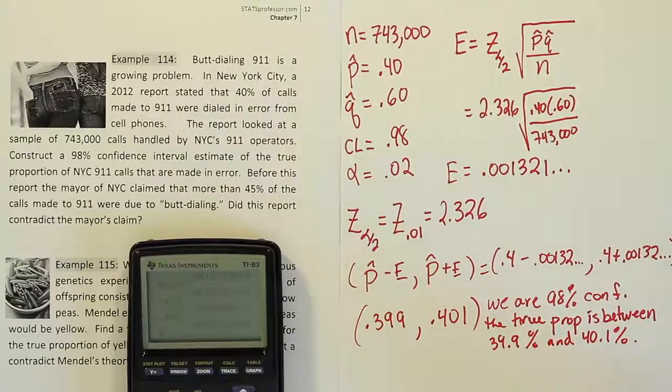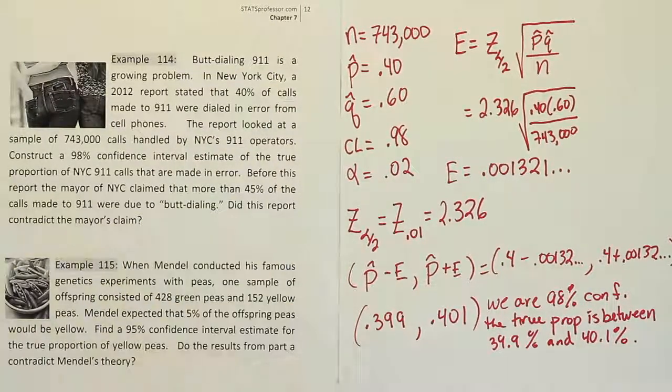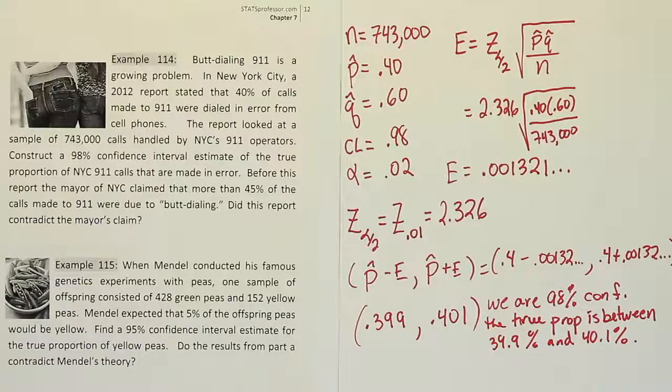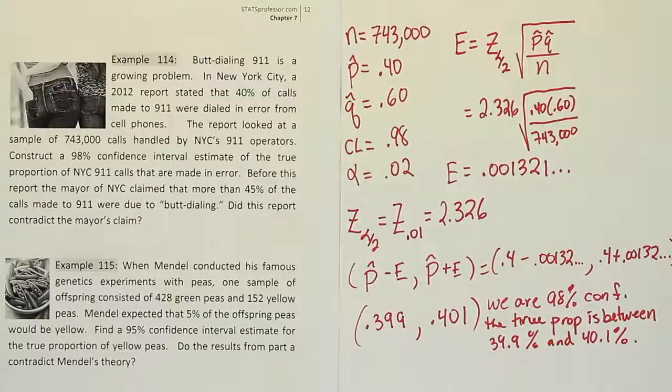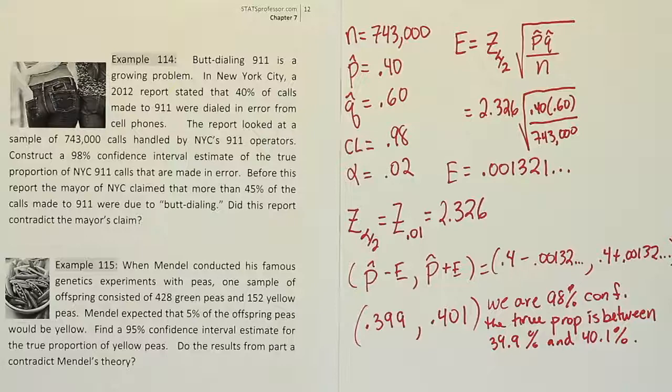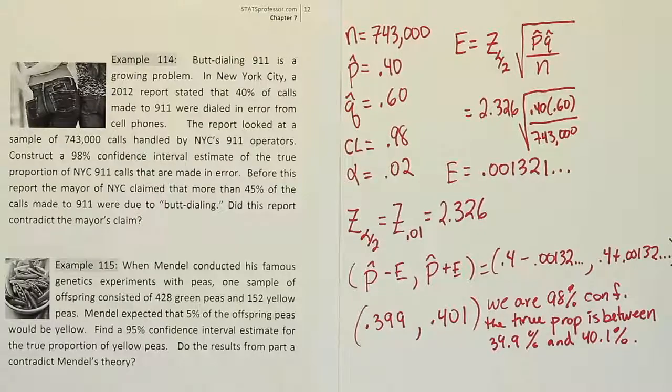The true proportion is between 39.9% and 40.1%. Okay, so that's the true percentage or proportion of calls to 911 in New York City that are dialed in error. So basically, cell phone butt dialing or some other mistaken phone call made.